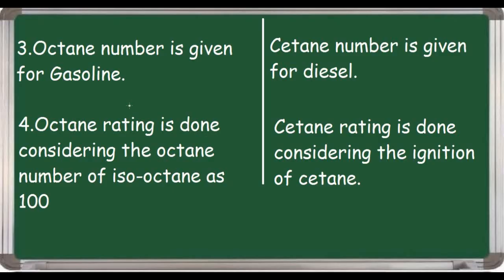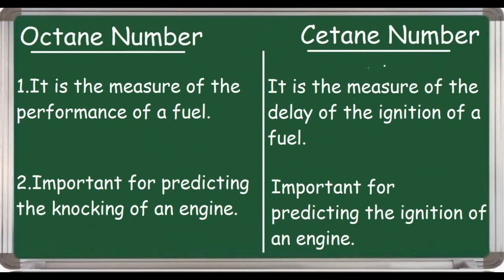Also, a higher cetane number simply means the time between when the fuel is injected into the combustion chamber and when the fuel ignites is minimized. This means the fuel has the ability to ignite more easily and readily due to compression. This shorter delay time results in more complete fuel combustion.